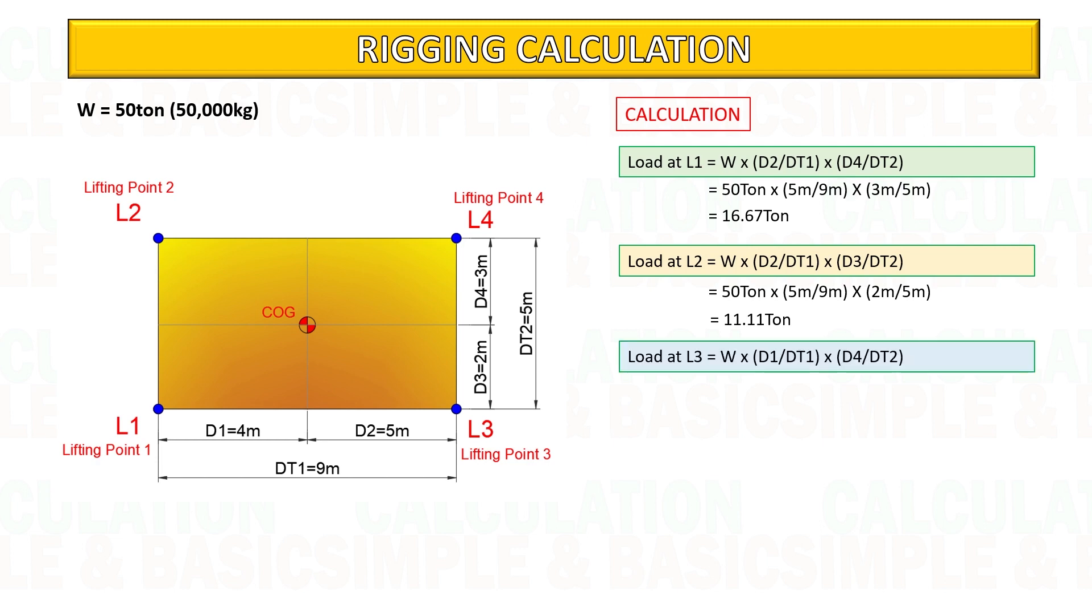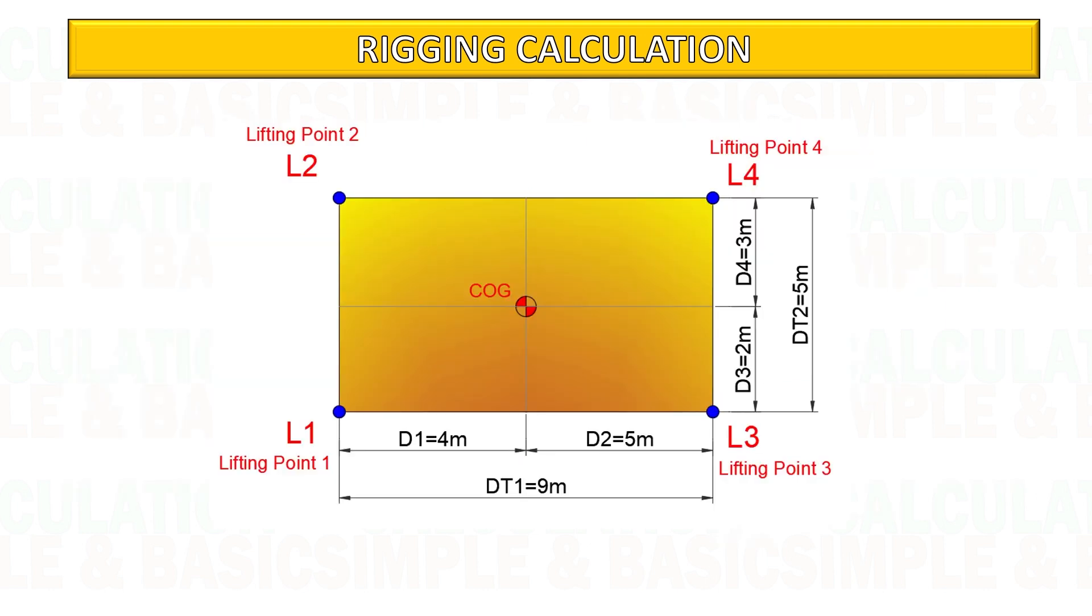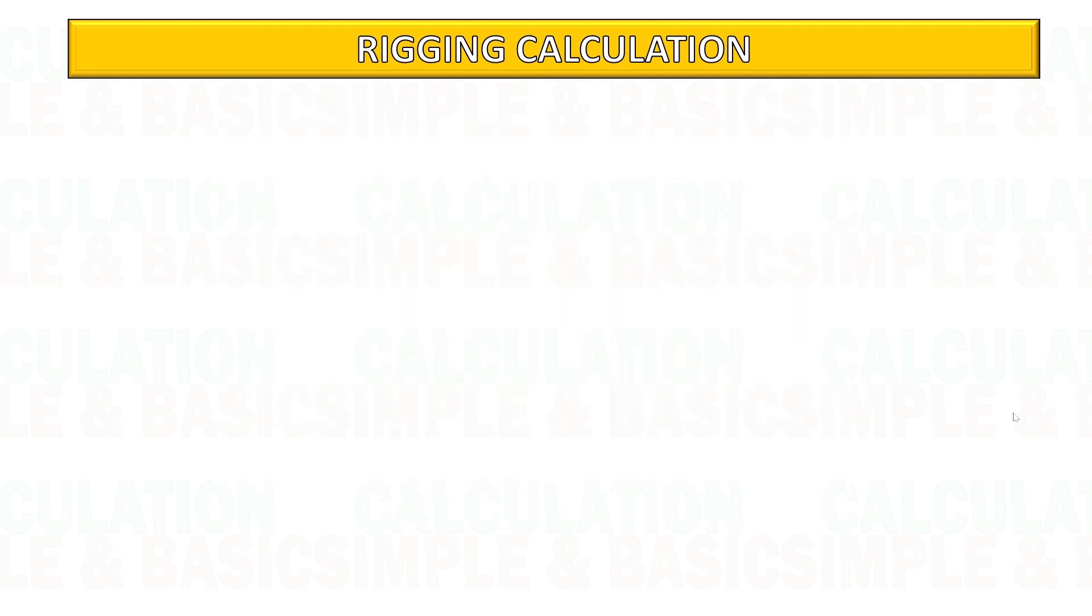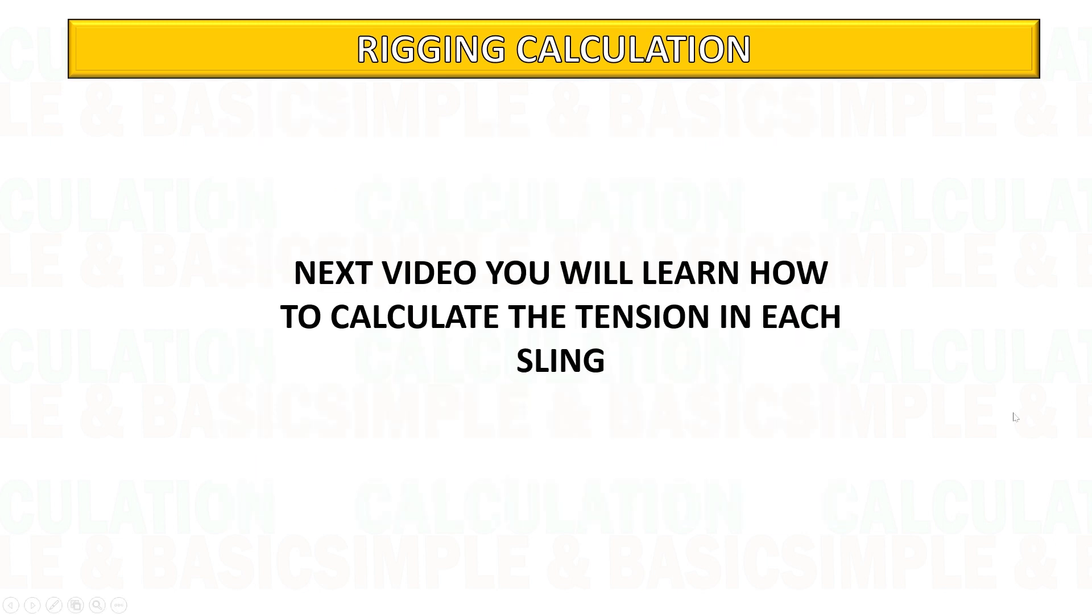In the calculation, lifting point one and three are closer to the center of gravity of the cargo, so the weight in each lifting point is much higher compared to lifting point two and four. In the next video you will learn how to calculate the tension in each sling.